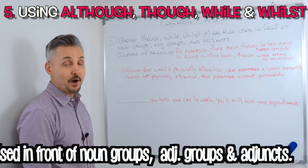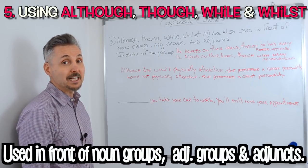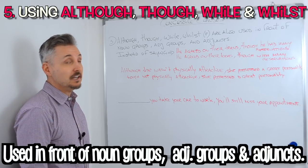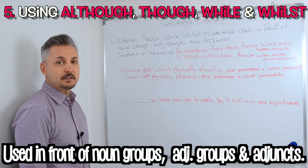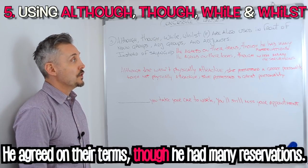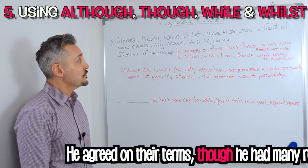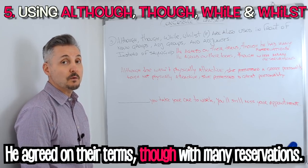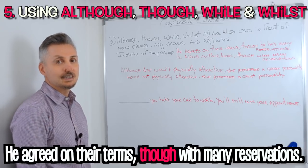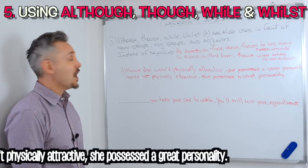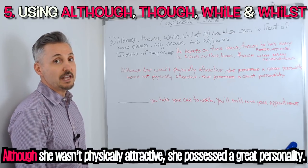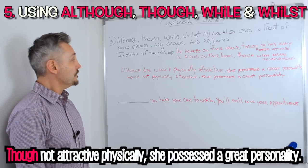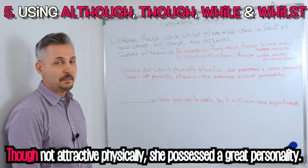Are you ready? Although, though, while, or whilst — which is a formal way to say 'while' — are also used in front of noun groups, adjective groups, and adjuncts. So instead of saying, 'He agreed on their terms, though he had many reservations,' you can say, 'He agreed on their terms, though with many reservations.' You can replace 'he had many reservations' with a noun group: 'though with many reservations.' One of my introductory examples was: Although she wasn't physically attractive, she possessed a great personality. To replace it with an adjective group, we can say: Though not physically attractive, she possessed a great personality.